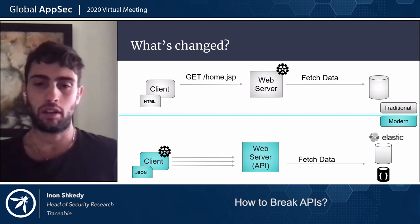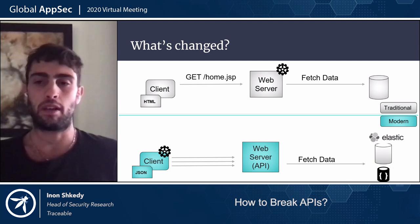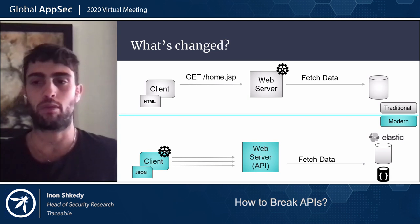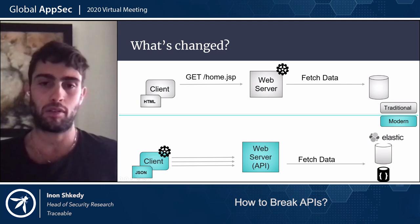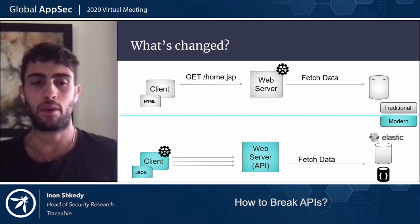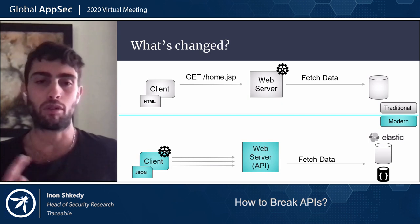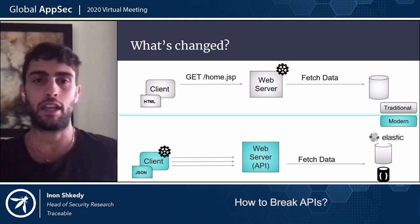After the web server gets calls from the client, it fetches data from the database — and you have more types of databases today. On top of traditional SQL, you can find Elasticsearch, NoSQL, and many other types. Another interesting change: instead of returning HTML pages, today the web server — the API — returns raw data in the format of JSON. So the client receives raw data and all the rendering, the creation of the visual page, is done on the client itself. This is a very interesting change.